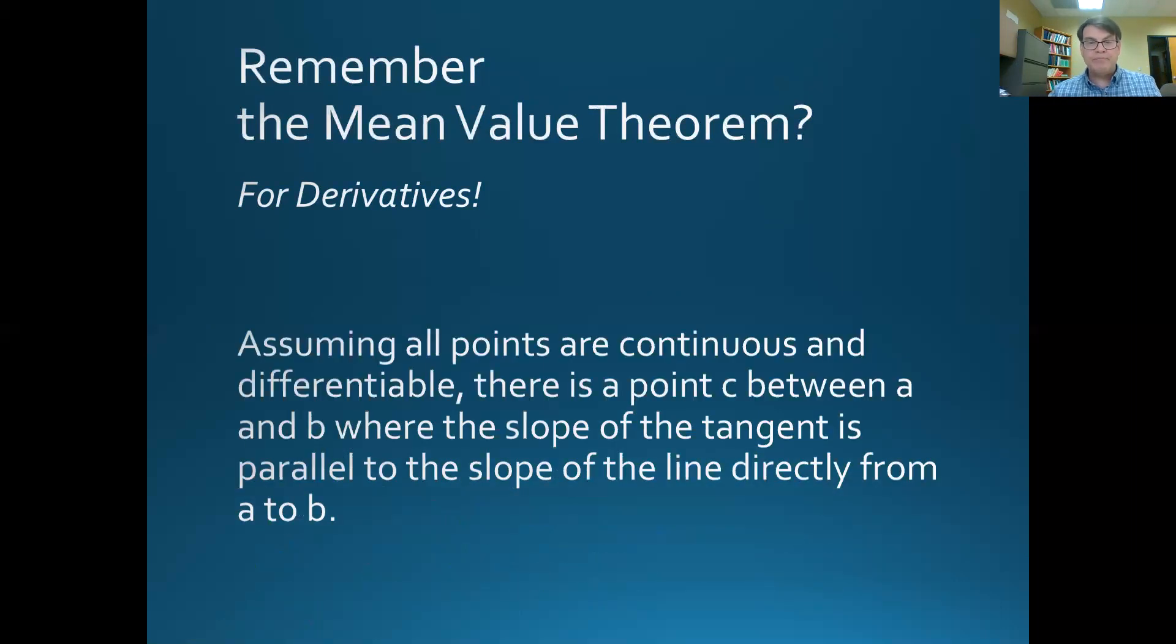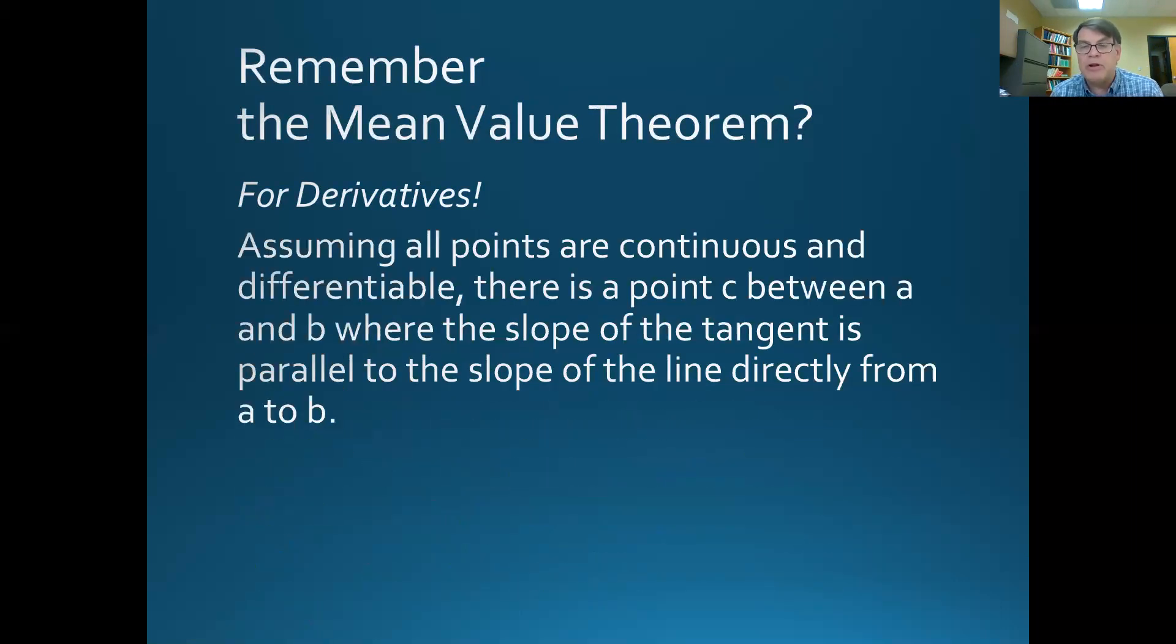That at some point, assuming all points are continuous and differentiable on a function, there is a point c somewhere between a and b where the slope of the tangent at that point is going to be parallel to the slope of the line directly from a to b, or to put it in these terms, that there is a point c where the derivative at that point is equal to the rise over the run.